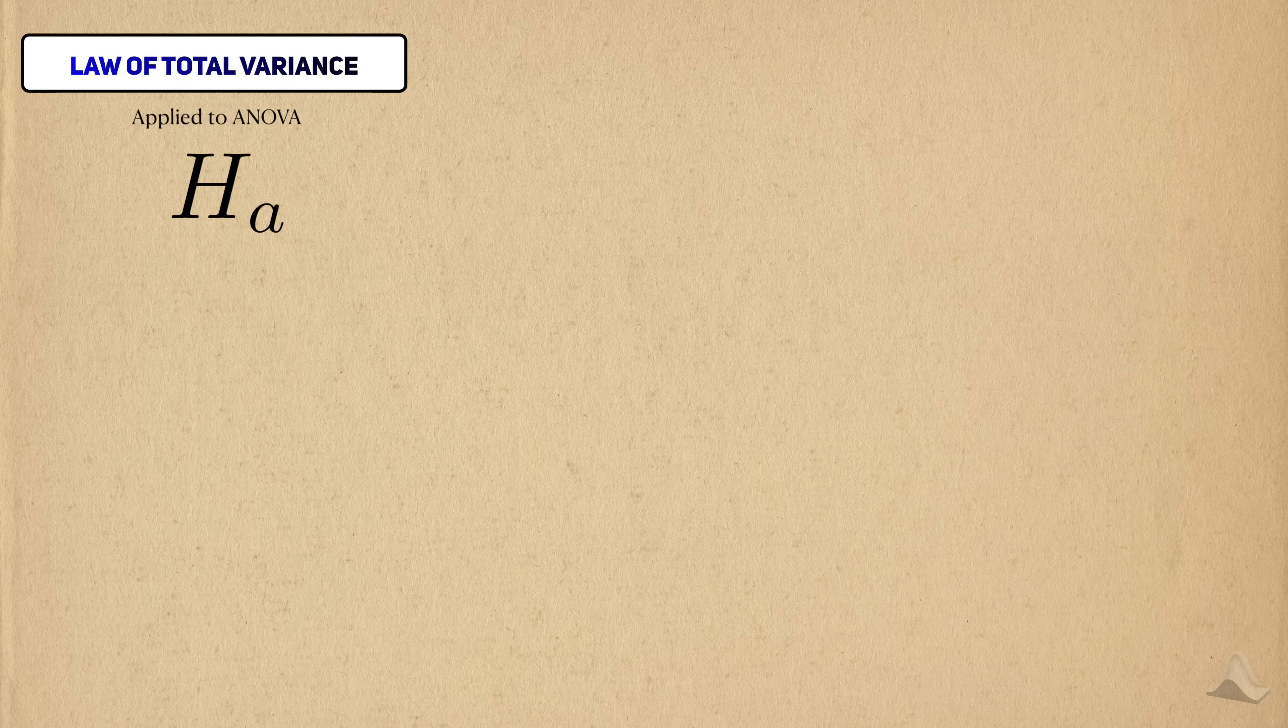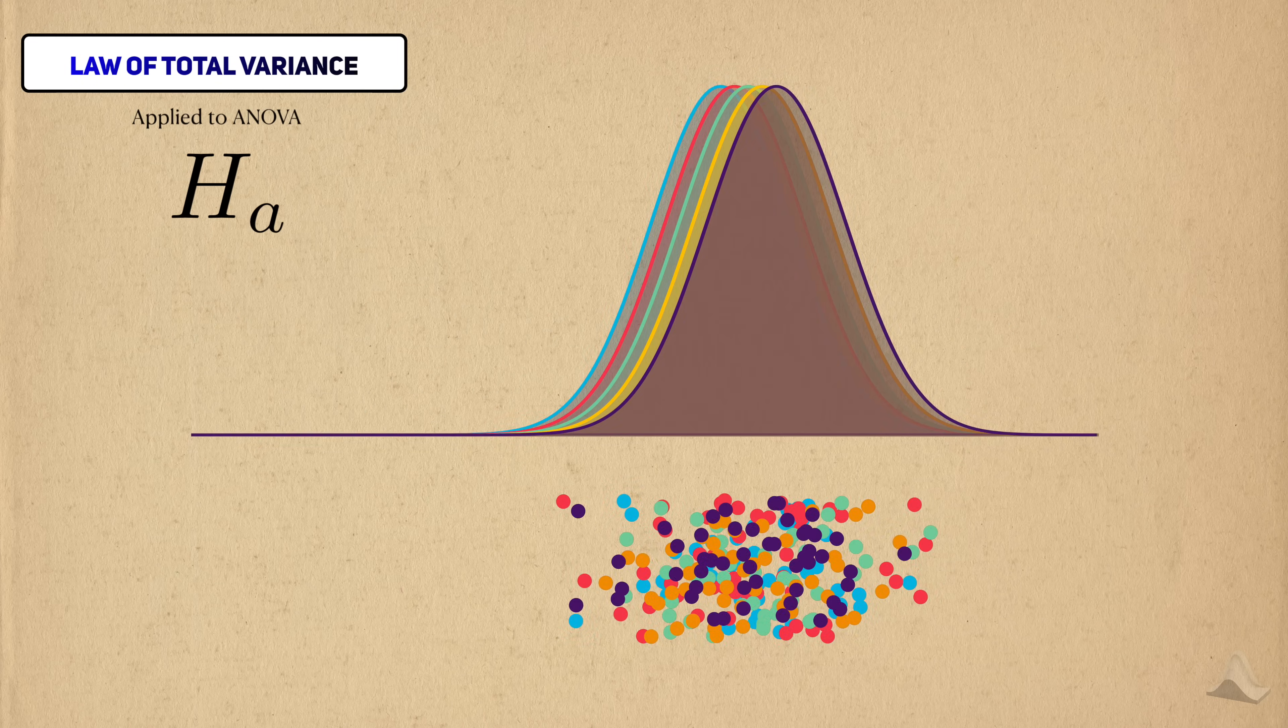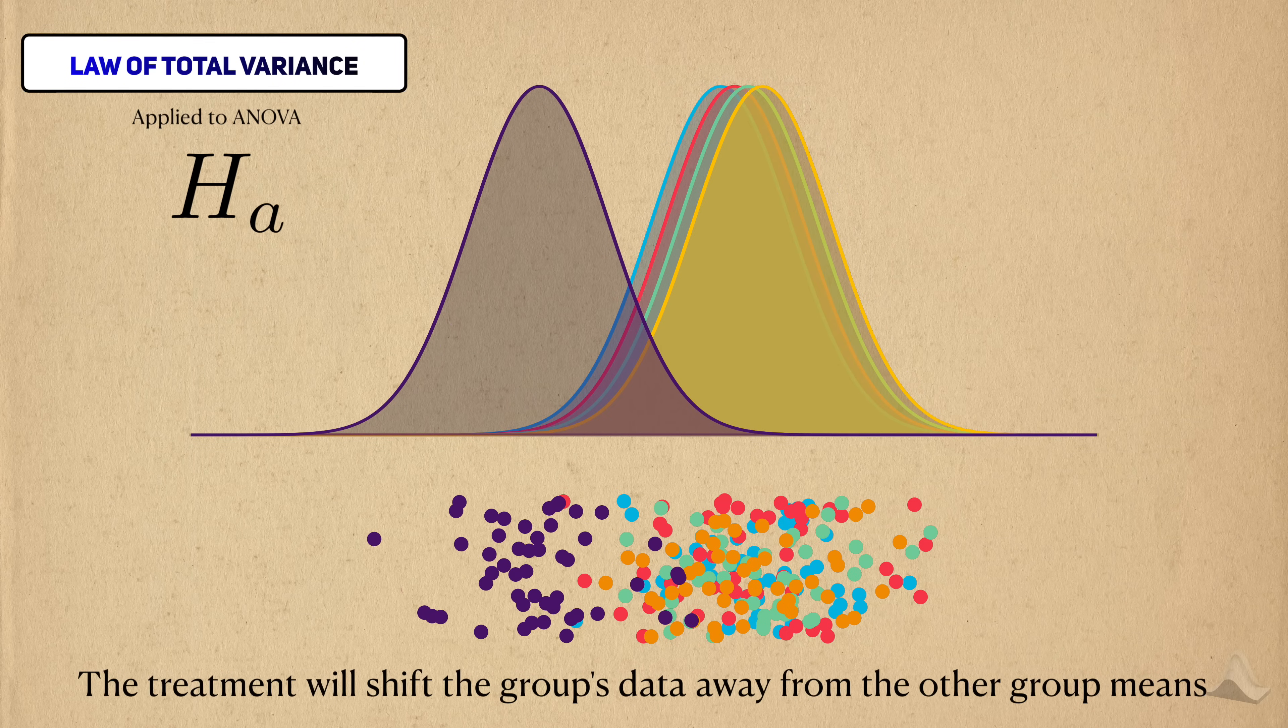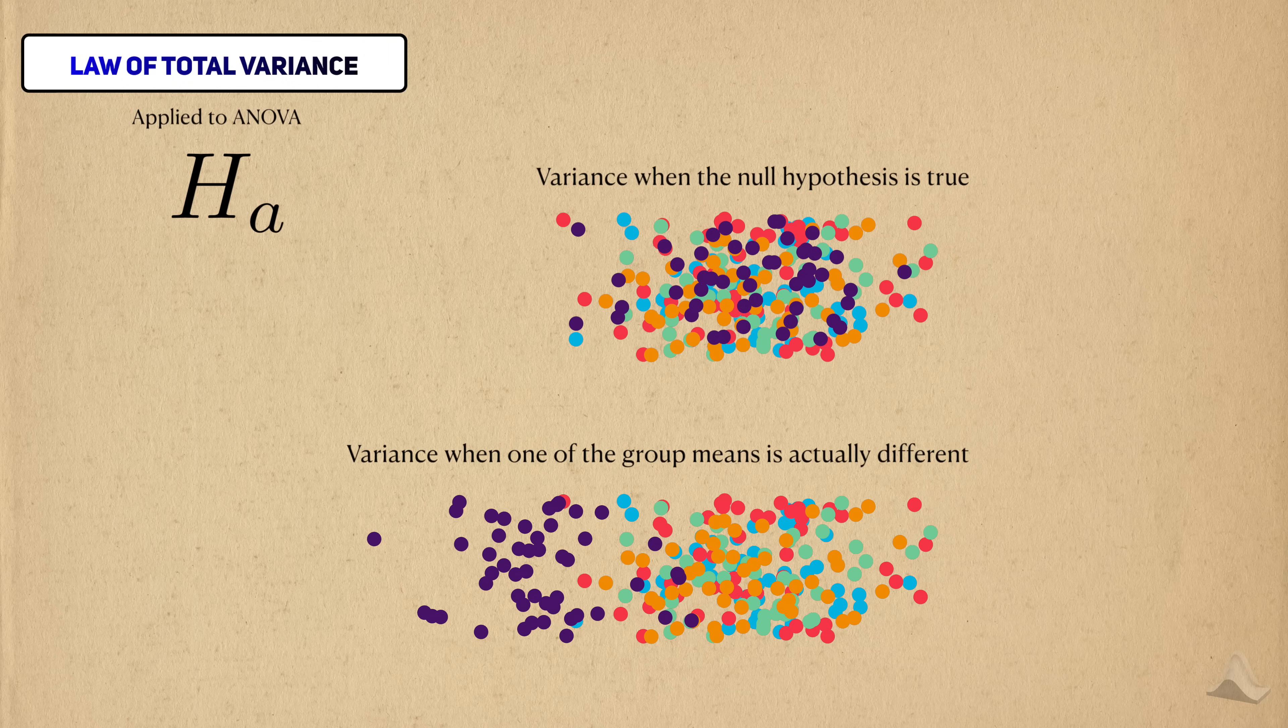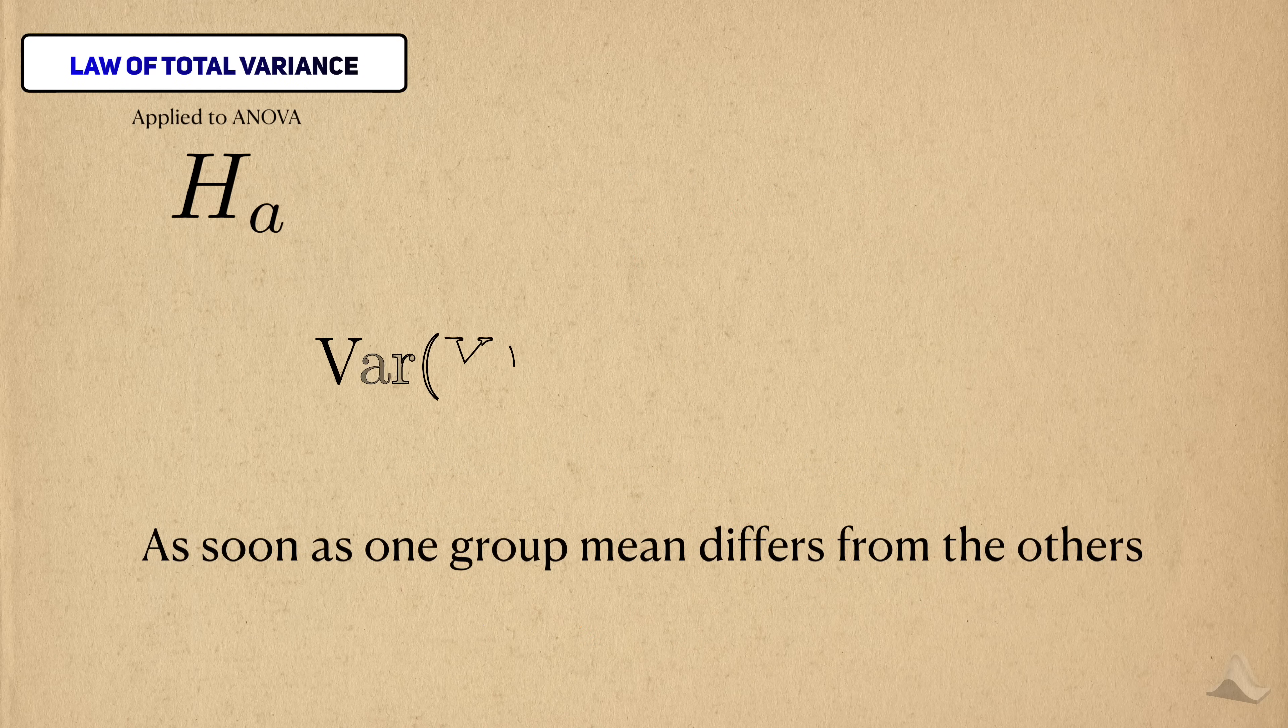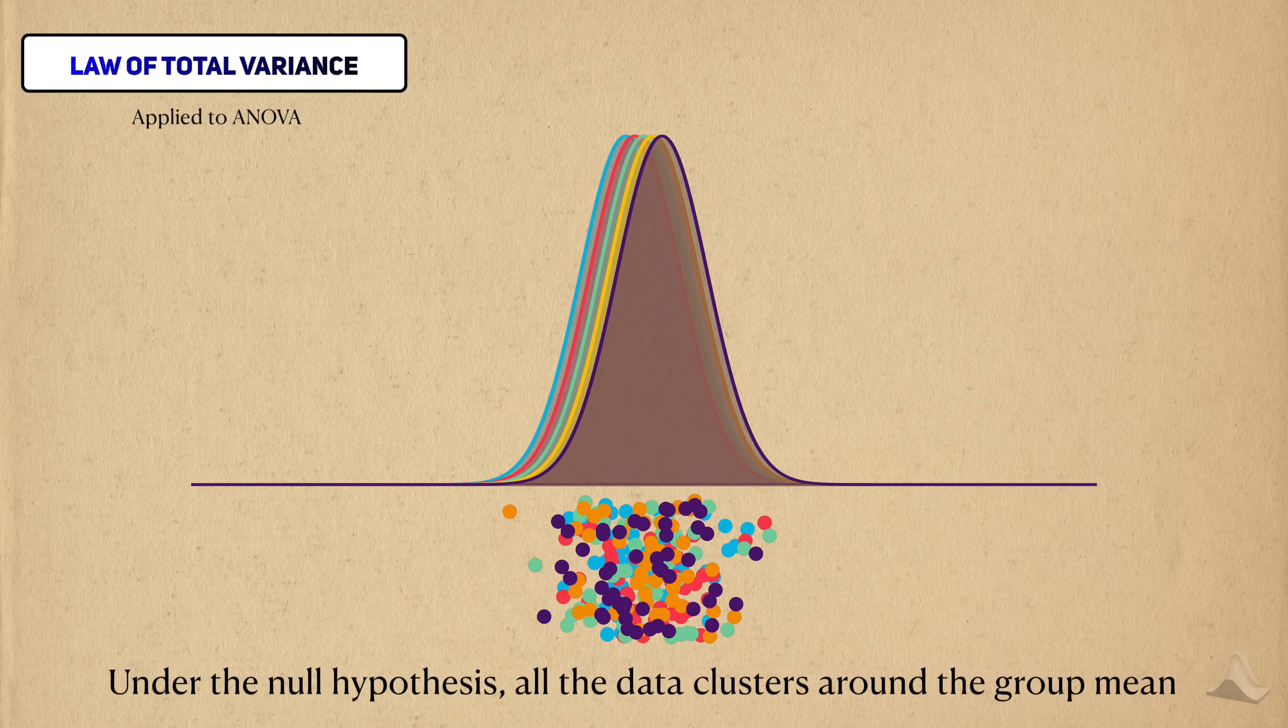But now let's rewind a bit and assume that the alternative hypothesis is true. To make it simple, we're going to see what happens when just one of the groups truly benefits from the treatment. The medicine will help decrease tumor size more, so this pushes this group's mean lower than the others. You can see that the variance in the outcome gets greater just because the group mean gets shifted to the left. As soon as one of the group means becomes different from the others, then the second term becomes greater than zero.